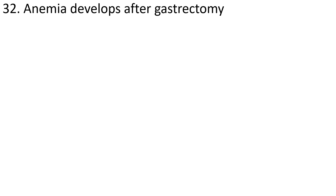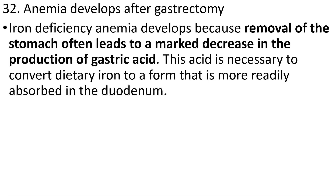The next question: anemia develops after gastrectomy. What is gastrectomy? It is the removal of a portion of the stomach. Iron deficiency anemia develops because removal of the stomach often leads to a marked decrease in production of gastric acid. This acid is necessary to convert dietary iron into a form that is more readily absorbed in the duodenum.